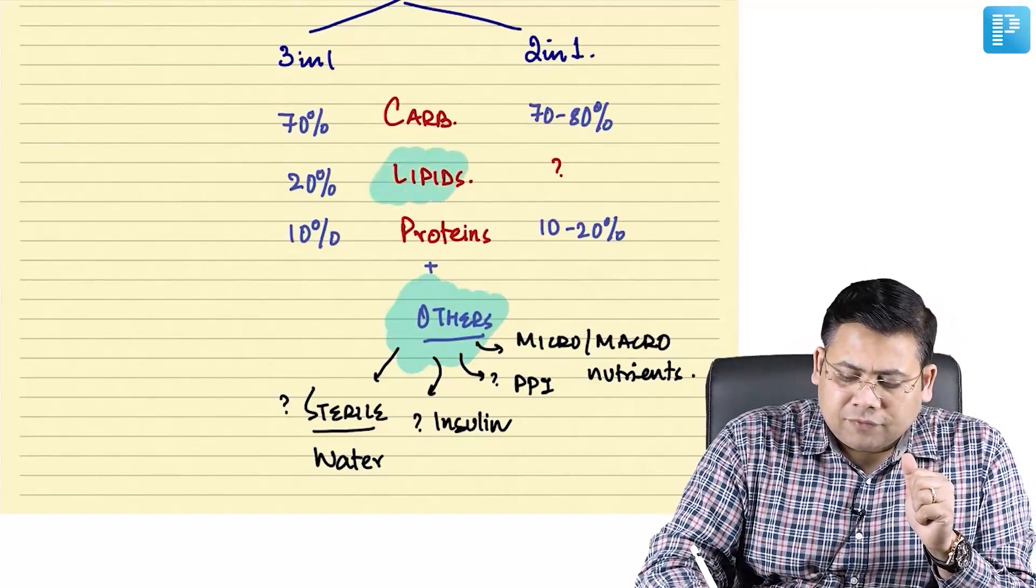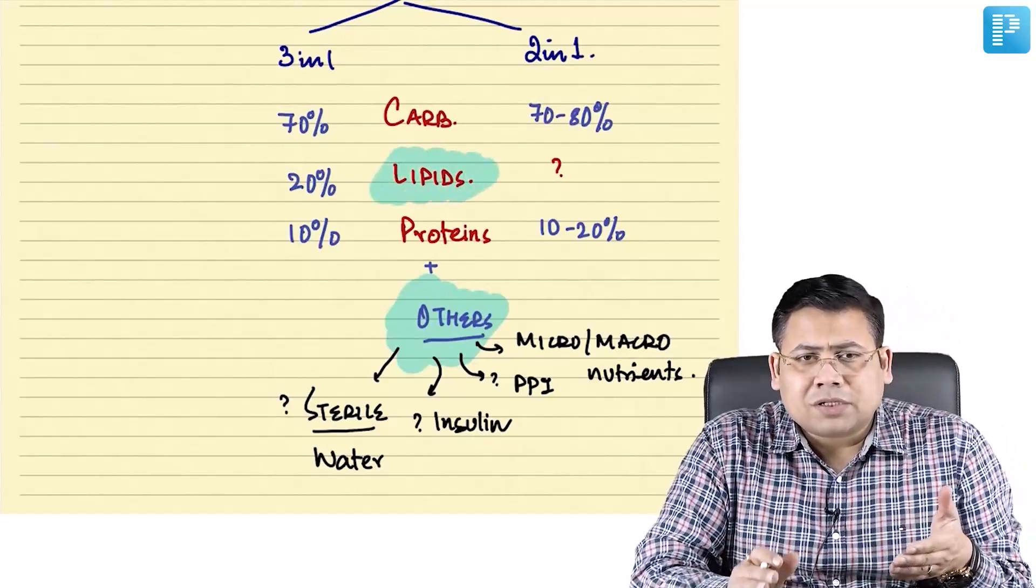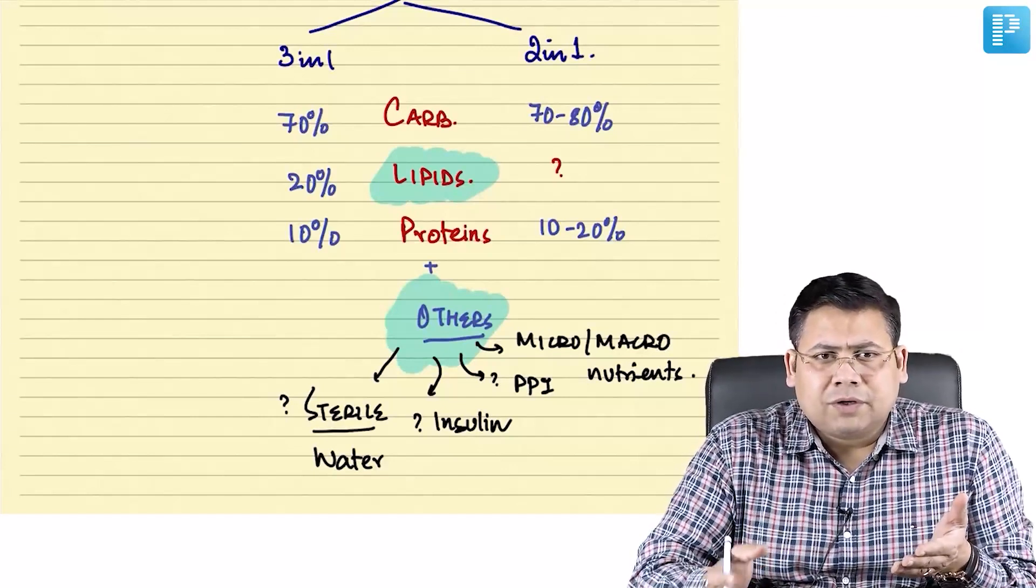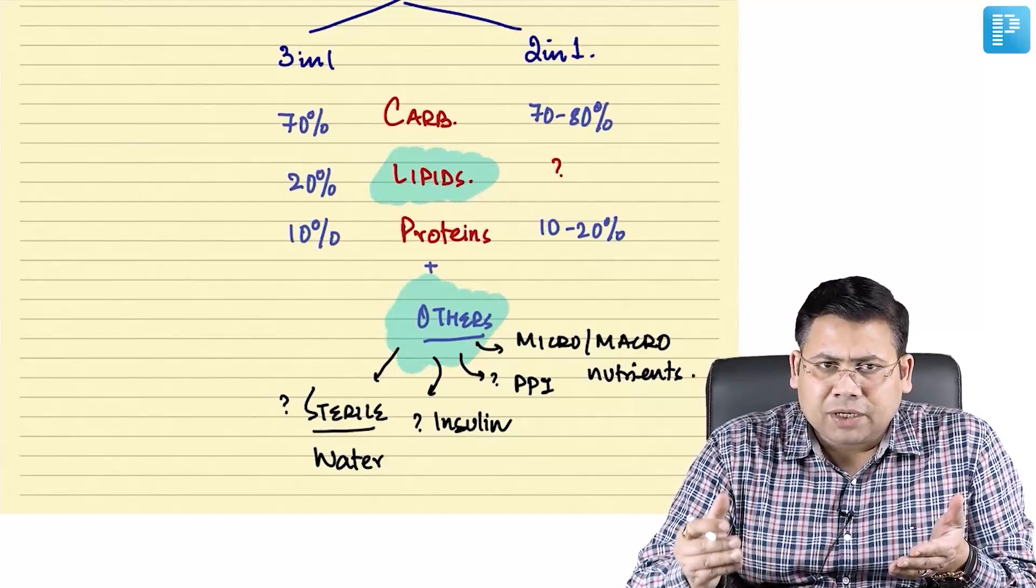We require lipids because it is important for assimilation of fat soluble vitamins: vitamin A, vitamin D, vitamin E, vitamin K.